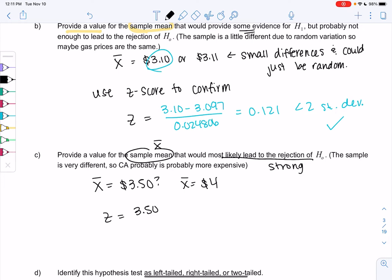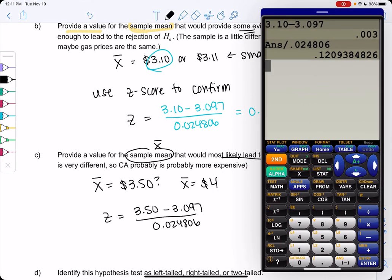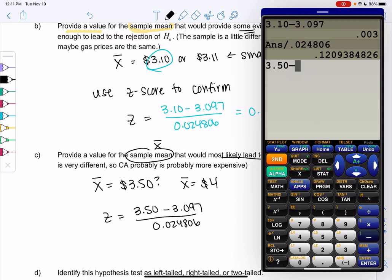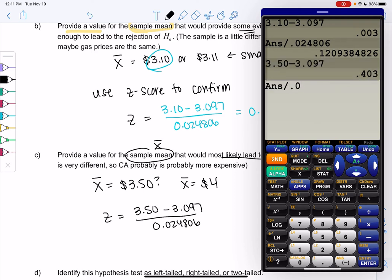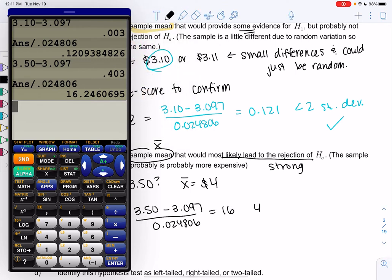So z is $3.50 minus $3.097 over $0.024806. And if you're really not sure, you can just use your calculator to guess and check. So we'll subtract and divide by the standard deviation. And yeah, it's way, it's a z-score of 16, so it's definitely significantly larger. 16.246, way more than two standard deviations. So it's definitely strong evidence.